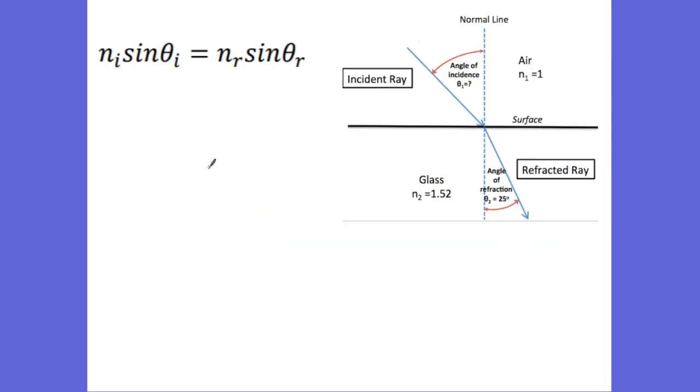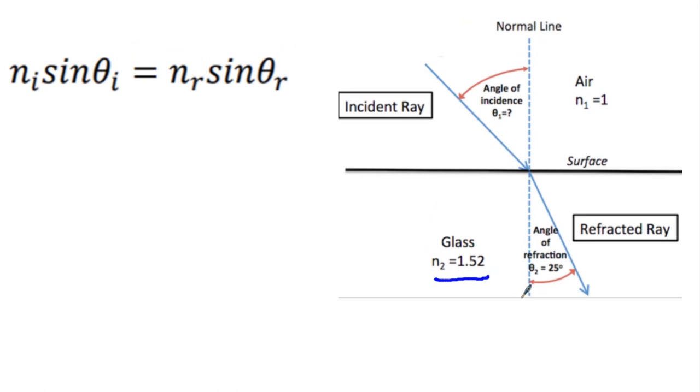But we have another type of problem right here where you can see they gave us the index refraction of glass right here. They gave us the angle of refraction which is 25 degrees. They gave us air, that index of incidence right there. But we don't know this. This is our big unknown.